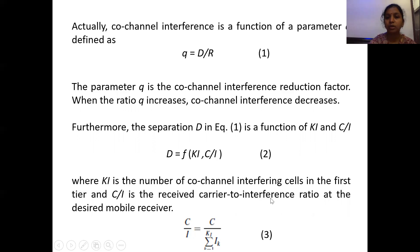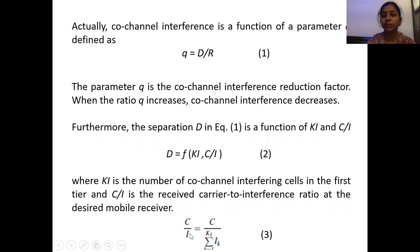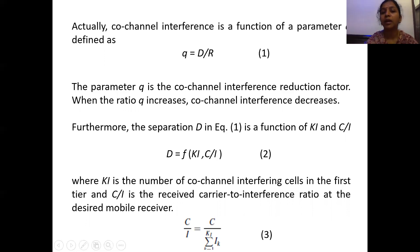What is the first tier? I will show you in the next figure. The distance d between two co-channel cells is a function of ki, the number of co-channel interference cells in the first tier, and C/I, the received carrier-to-interference ratio on the desired mobile receiver. The formula for the received carrier-to-interference ratio is C/I, where the interference I is caused by the number of cells in the first tier — whether it is six or seven. The summation of the interference of all cells will be taken as the total interference, as you will see clearly in the next slide.